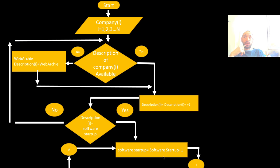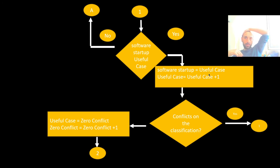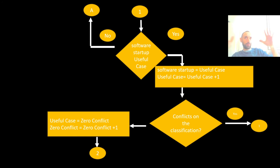We then determine whether each software startup description is a useful case or not — this is another filter. If it is a useful case, we increment a counter to collect all useful cases found. If it is not, we move on to the next software startup, taking only the useful cases from the full set.